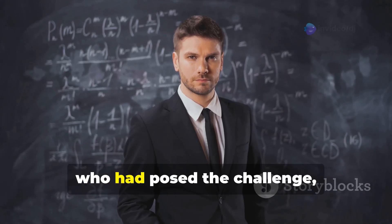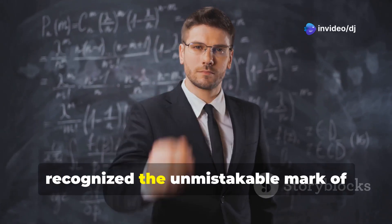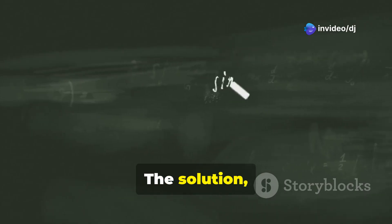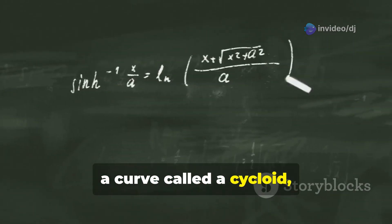Yet the elegance of his solution betrayed his identity. Johann Bernoulli, who had posed the challenge, recognized the unmistakable mark of Newton's brilliance. The solution, a curve called a cycloid, was not merely a mathematical curiosity.